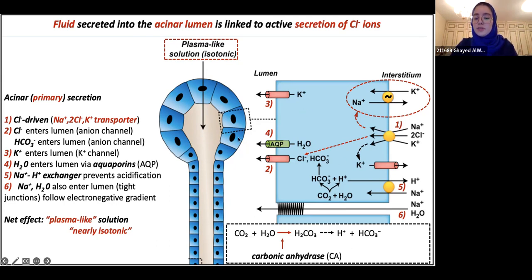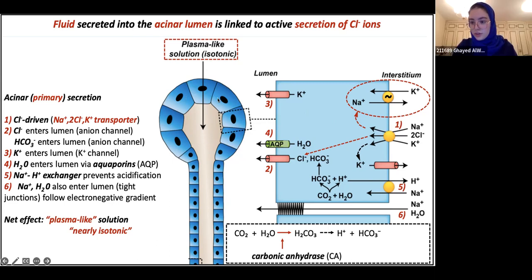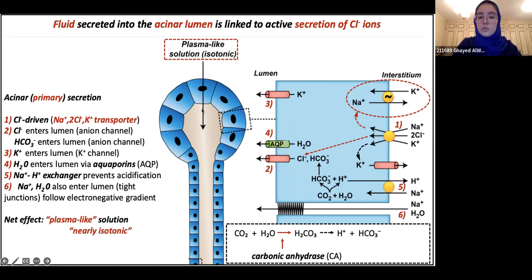In the acinus — where saliva production happens — the main point to remember is that production of saliva is driven by the movement of chloride ions. The fact that we have chloride ions coming into the gland is the reason why all of the fluid is secreted. So fluid secretion is driven by chloride ions. We have a lumen on the left side — the inside of the gland — and the interstitium on the right side, which is everything outside the gland.